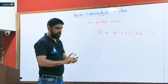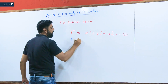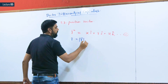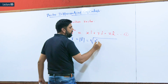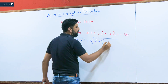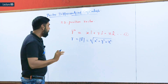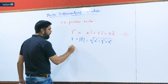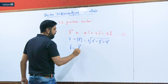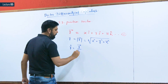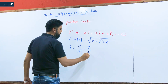Let us analyze vector R first. The modulus of vector R — that is, scalar R — is the magnitude: the square root of x-squared plus y-squared plus z-squared. R-cap is the unit vector in the direction of R, defined as vector R divided by its magnitude R. R-cap gives only the direction.